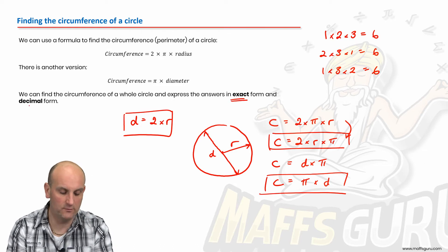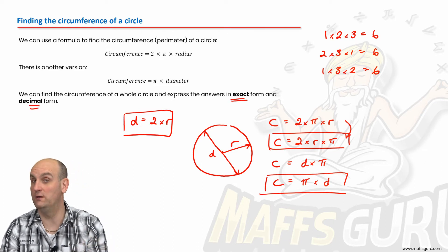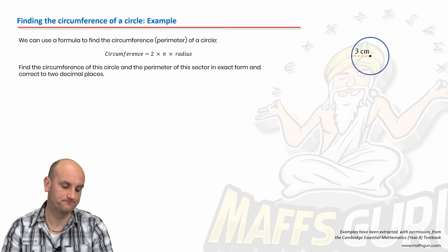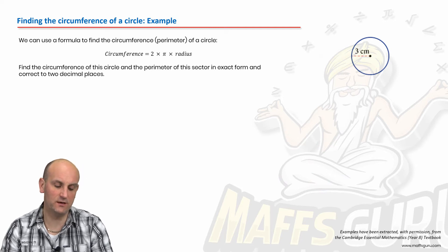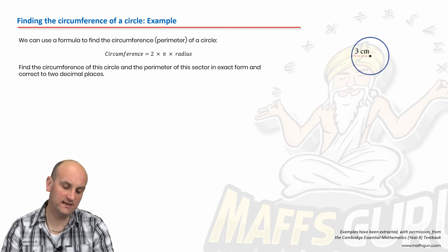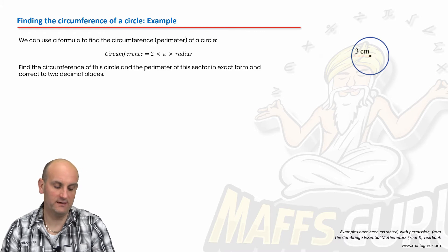Now, we can find answers in exact form and decimal form. And that's really important that you read the questions. All right, so find the circumference of this circle and the perimeter of this sector in exact form and correct to two decimal places.